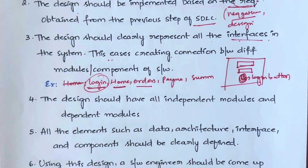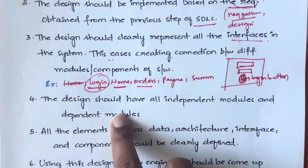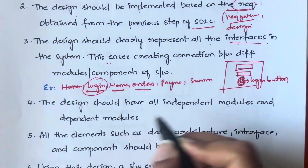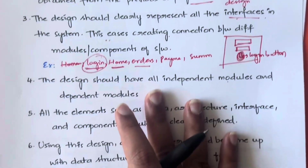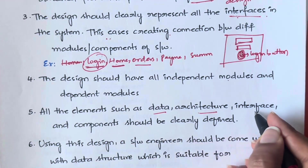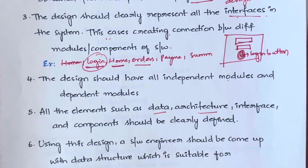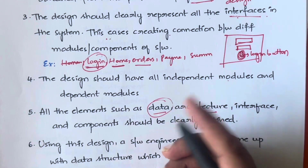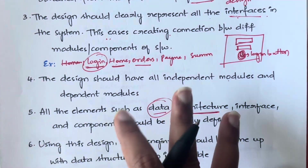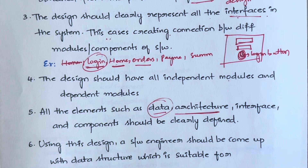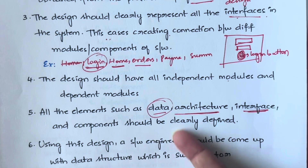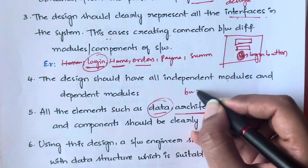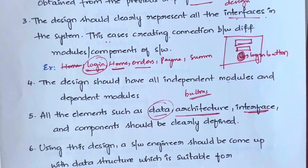Next, the design should have all independent modules and dependent modules specified — every module in your system should be clearly defined. Also, all elements such as data, the architecture, the interfaces, and the components should be clearly defined. That means what kind of data you're going to use, how the architecture of your system should look, how they communicate, and which components like buttons and text boxes should be placed where — everything has to be clearly defined.